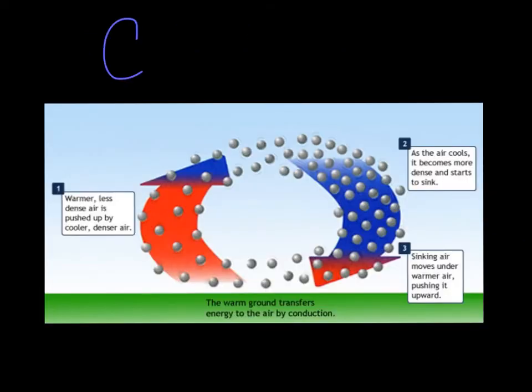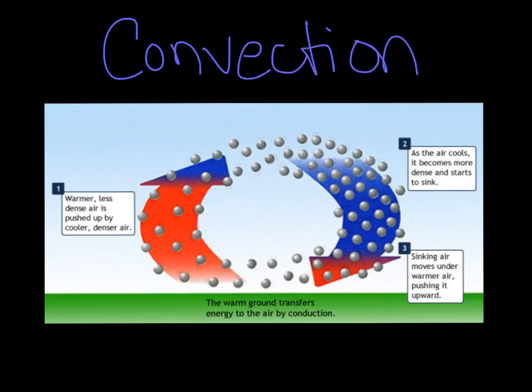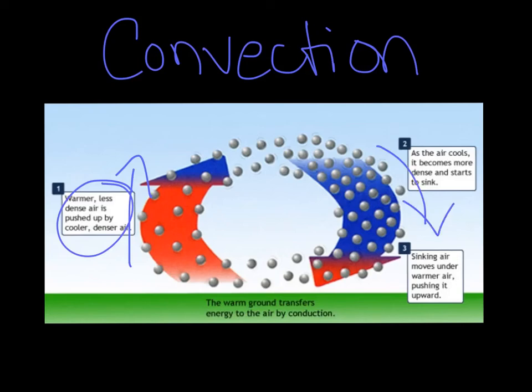The next thing we're going to talk about is convection. You've seen this in the lava lamp — the liquid moves from the bottom of the container to the top. The warmer, less dense air is pushed up by the cooler, denser air. As it cools, it becomes more dense and starts to sink, and the sinking air moves under the warm air, pushing it upward. This is a big cycle, and it's called convection.